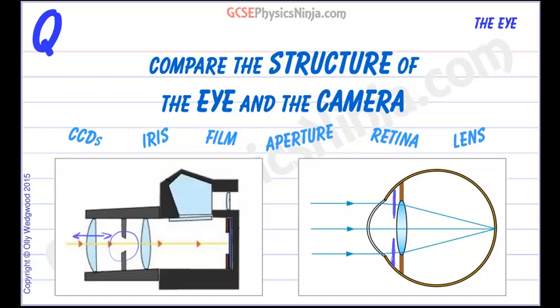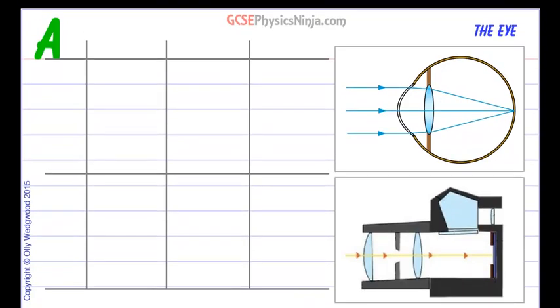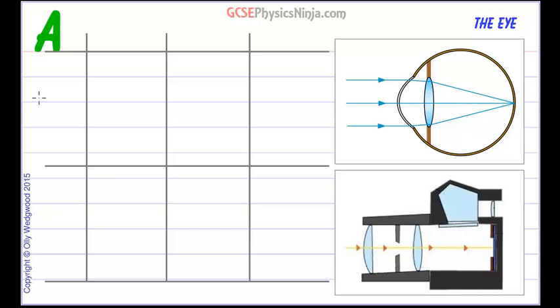So let's take these keywords and summarize them in the table. So we'll have the eye here and we'll have camera here. Let's talk about the lens used. Let's talk about the light control. How much light we let in. And let's also compare light detection.